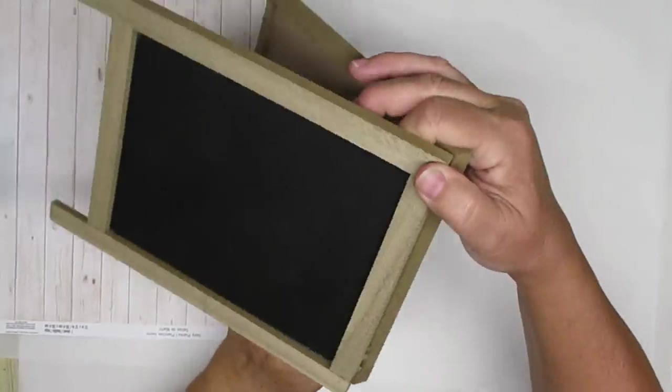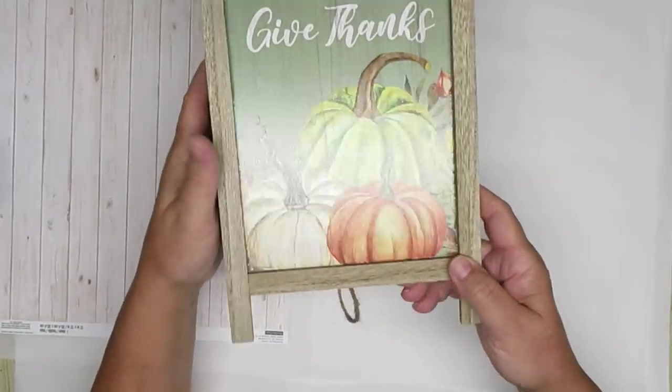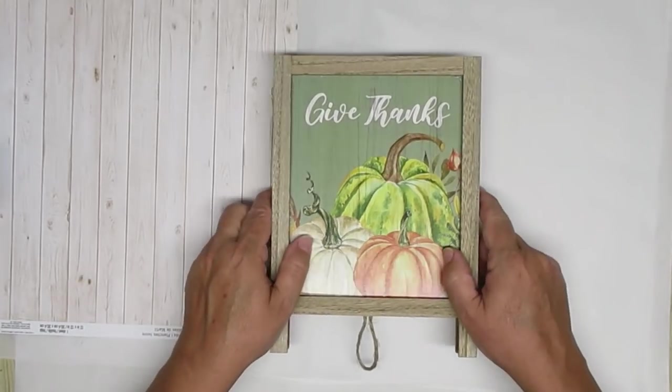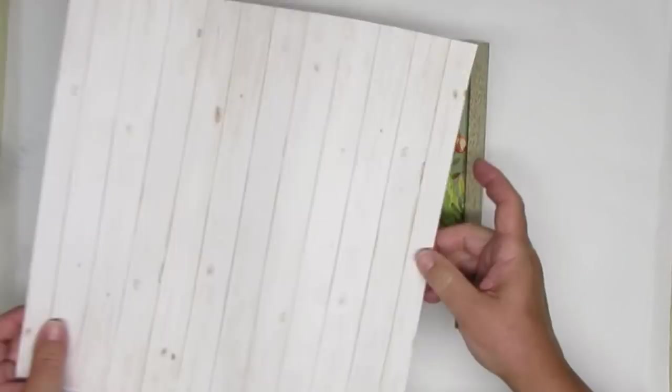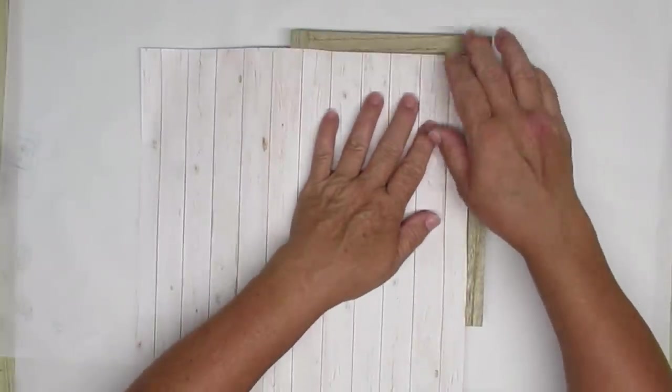My first project is using this easel that I picked up at my local Dollarama store for only $3.50. Now it's really cute the way it is but that's not how I want to use it. I'm going to create a little kitchen sign.